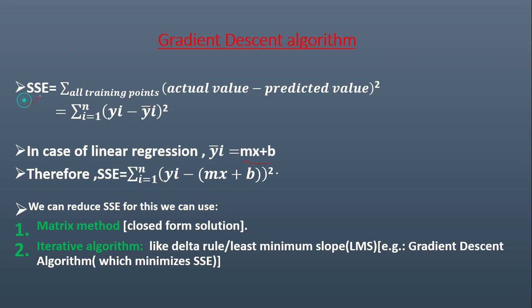Students, our main aim is to reduce this error. This error can be reduced using two methods. One is matrix method. Another one is iterative algorithm. Matrix method, you have already studied in the video before. It is a closed form solution.